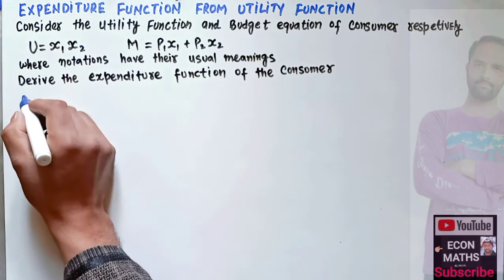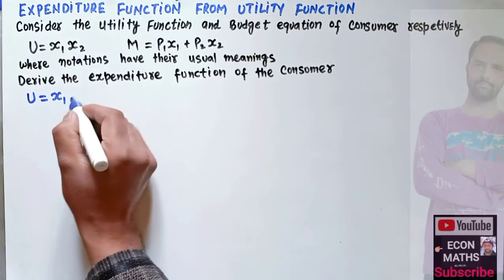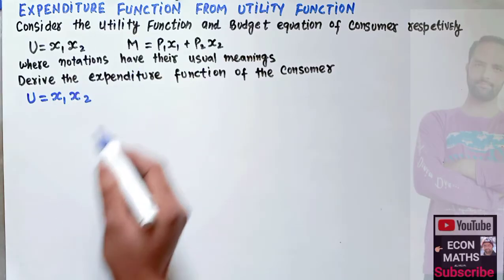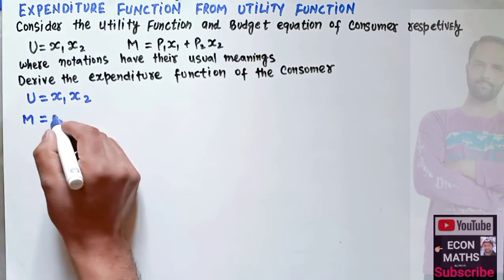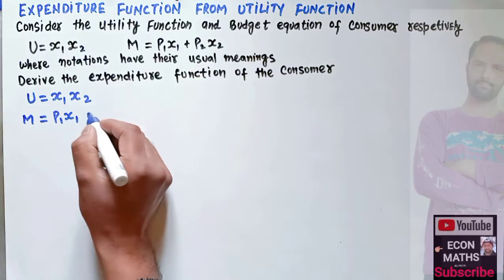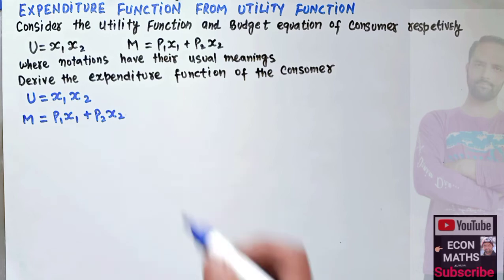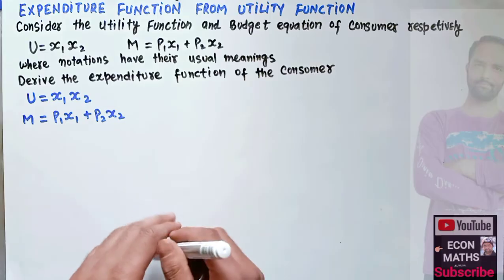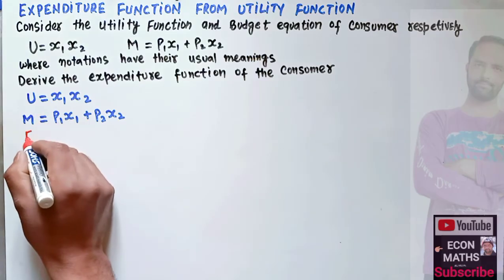So how do we do that? Let's first write the utility function which is given as u = x1 times x2, and we are also given the budget equation, that is m = p1·x1 + p2·x2.